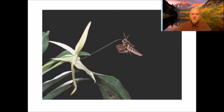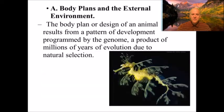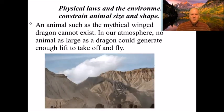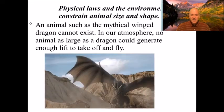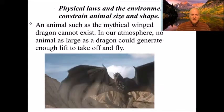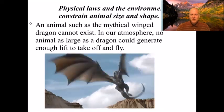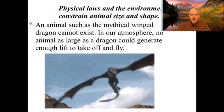Body plans and the external environment: the body plan of an animal results from a pattern of development programmed by the genome — the genes — the product of millions of years of evolution due to natural selection. This produces some very strange-looking creatures like the leafy sea dragon. Physical laws in the environment constrain animal size and shape. An animal like a winged dragon can't exist; something that large could not generate enough uplift to take off and fly.